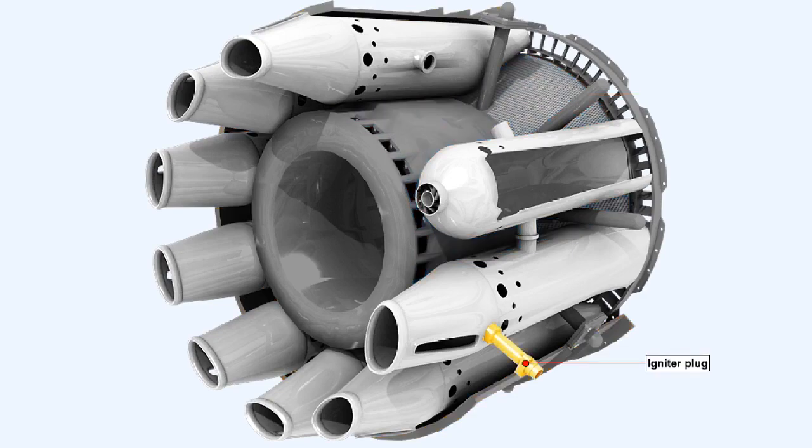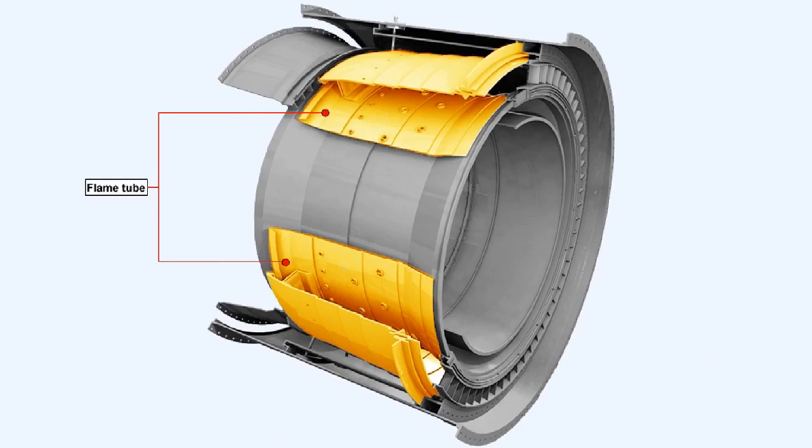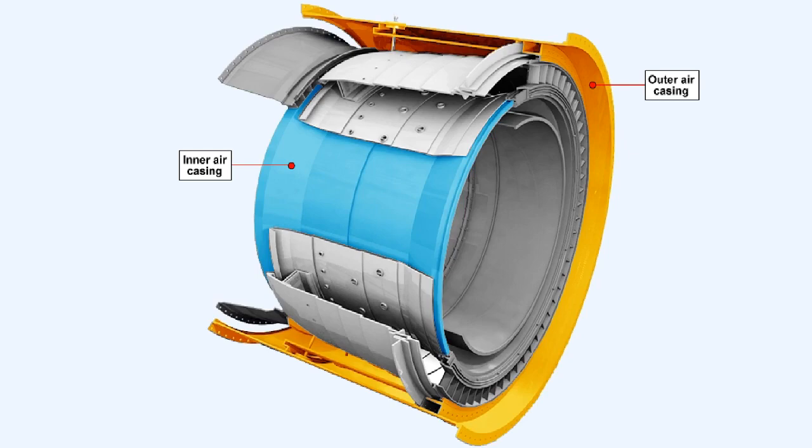Notice the position of the igniter plug. This illustration is of a typical example of an annular combustion chamber system. It has only one flame tube which is contained by an inner and outer air casing.